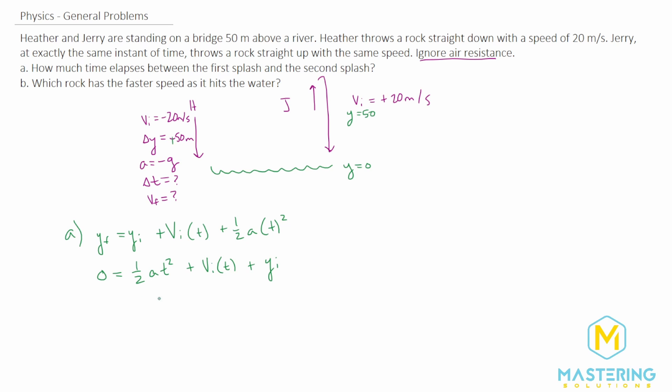So the acceleration we talked about is negative g. So that's one half times a negative 9.8 meters per second squared, and that's multiplied by t squared. Plus the initial velocity for Heather, in this case is a negative 20 times t, plus the delta y we said was a positive 50 meters. So our a, this is ax squared plus bx plus c, that's all equal to zero. So our a in this case will be a negative 4.9, our b is a negative 20, and our c is a 50.